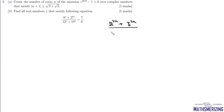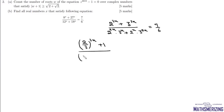The second question is fairly simple. We are given the equation 8^x + 3^(3x) divided by (2^(2x)·3^x + 2^x·3^(2x)) equals 7/6, which we rewrite as 2^(3x) + 3^(3x) in the numerator. We divide everything by 3^(3x) to simplify.